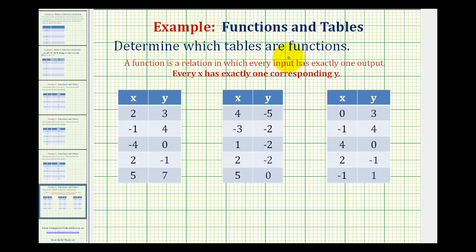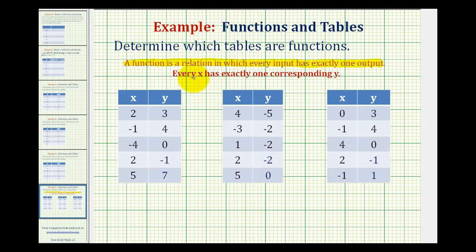We're going to determine which of the following tables represent functions. A function is a relation in which every input has exactly one output. Looking at these tables, the x values will be the inputs and the y values will be the outputs. So if these tables are functions, every x value must have exactly one corresponding y value.